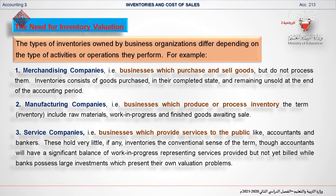The third type of companies are service companies. A service company is a business that generates income by providing services instead of selling physical products, such as bankers and accountants. For example, accounting companies hold very little, if any, inventories. In this case, the term inventory may include a balance of work in progress, which represents services provided but not yet billed.